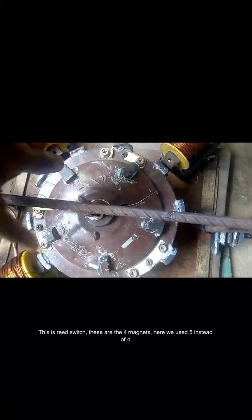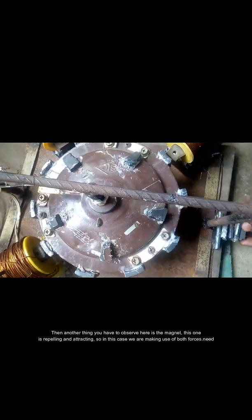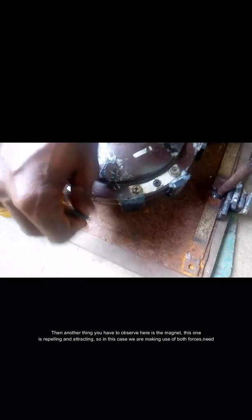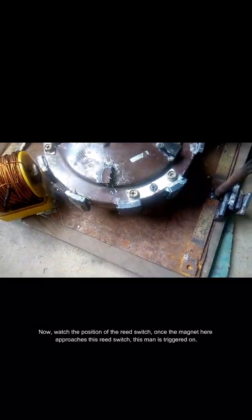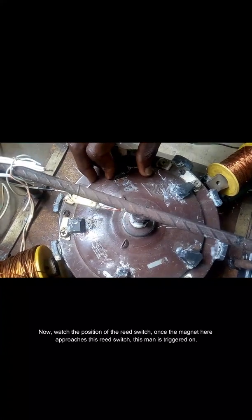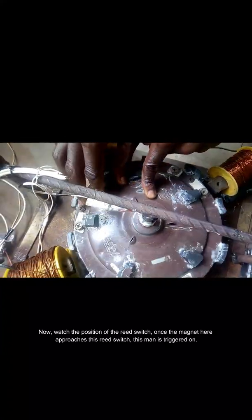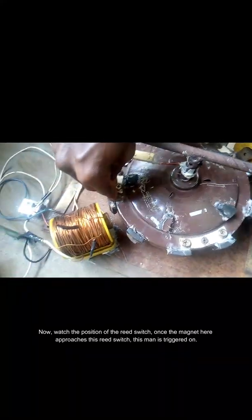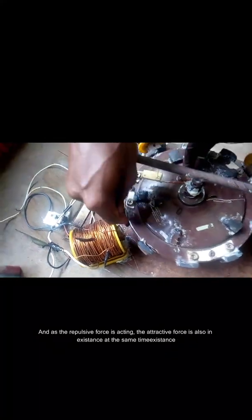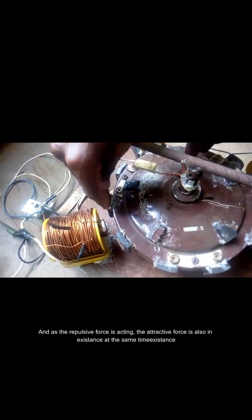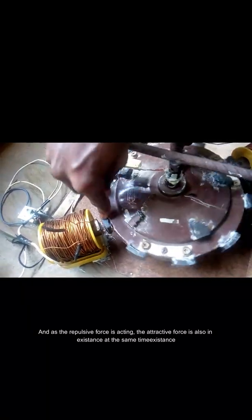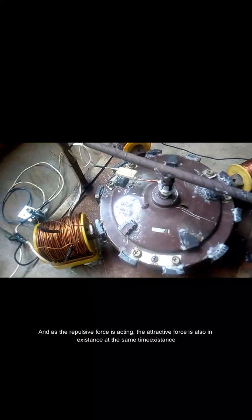We used five instead of four. Another thing you have to observe here is the magnet is repelling and attracting. In this case, we are making use of both forces. Now watch the position of the reed switch. Once the magnet here approaches this reed switch, the magnet is triggered on, and as the repulsive force is acting, the attracting force is also in existence at the same time.